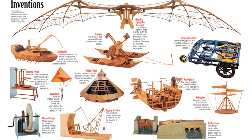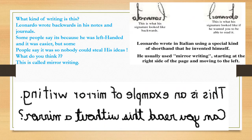Here are some of his inventions. Wow, he was really a genius! Quickly look at this picture on the right — what kind of writing is this? Leonardo wrote backwards in his notes and journals. Can you believe it? Some people say it's because he was left-handed and it was easier. But some people say it was so nobody could steal his ideas. What do you think? This is called mirror writing. Leonardo wrote in Italian using a special kind of shorthand that he invented himself. He usually used mirror writing starting at the right side of the page and moving to the left.